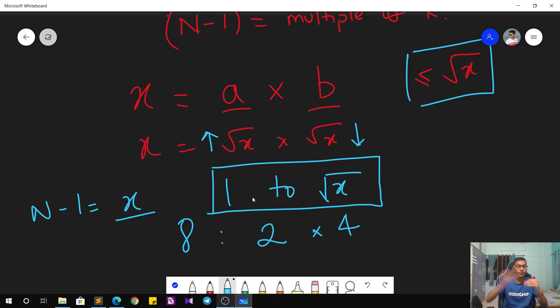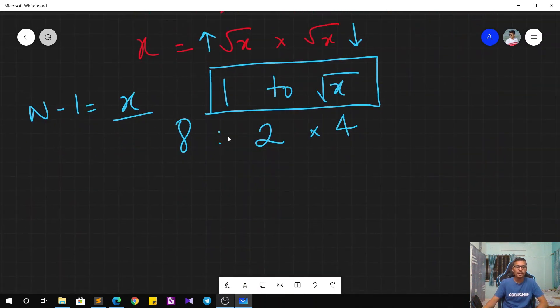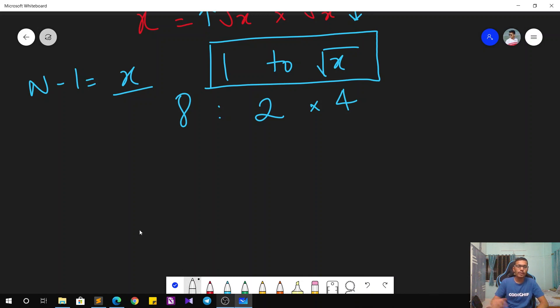Like here we have 2 into 4, right? But it may happen in some cases this can be a corner case as well. Like you have a number N minus 1 equals X equals something like 9. So if you try to check for 3, then 3 is a divisor, but the other number—9 divided by 3—is also the same. So in this case you don't count 3 twice. You have to be very careful. Only if these two numbers are different do you count them twice. Otherwise, you count them only once.